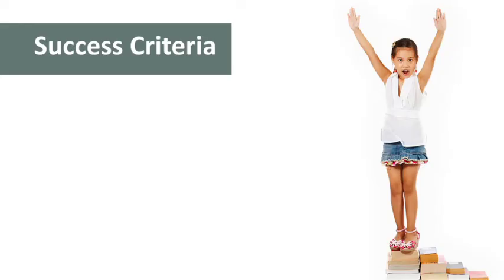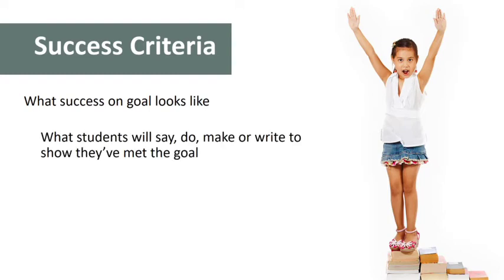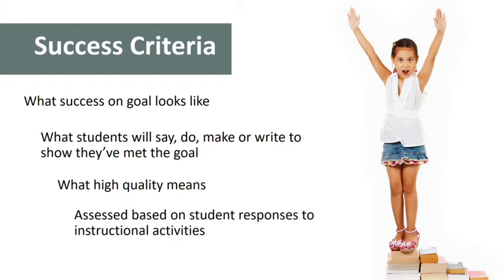Now let's move on to talk about success criteria. They are very concrete statements that describe how teachers and students will know whether learning goals have been achieved — reflecting what students will say, do, make, or write to show they have met the goals, indicating concretely what quality is expected of students, and assessed based on student responses to instructional activities.